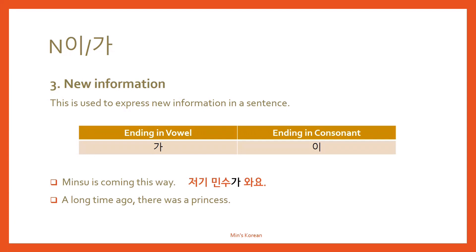And another example: 'A long time ago, there was a princess.' This is new information and introduces a new topic. So you use 가. 옛날에 공주가 있었어요. 공주 is the subject and also new information, so you say the 가 particle: 공주가 있었어요.